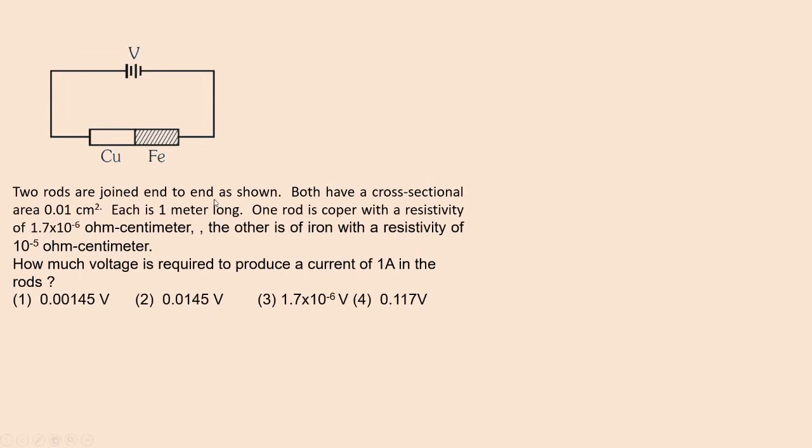Two rods are joined end-to-end as shown. Both have a cross-sectional area of 0.01 cm². Each is 1 meter long.